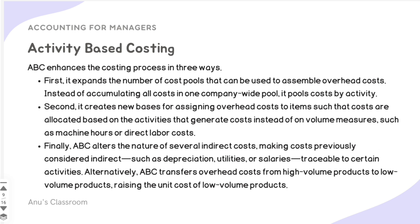The ABC process enhances costing in three main ways. First, it expands the number of cost pools — instead of accumulating all costs in one company-wide pool, costs are split between activities. Second, it creates new bases for assigning overhead costs to items, so that allocated cost is based on the activities that generate those costs rather than volume measures like machine hours or direct labor cost.